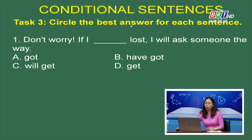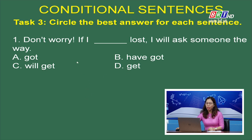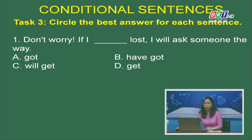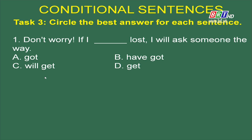Bây giờ chúng ta sẽ có bài tập thực hành câu điều kiện loại 1 và loại 2. Các em hãy chọn một lựa chọn đúng trong mỗi câu sau đây. Ở mệnh đề chính đang sử dụng thì tương lai đơn, vậy chắc chắn mệnh đề if phải dùng thì hiện tại đơn — đây là câu điều kiện loại 1. Chỉ có lựa chọn D là phù hợp. So the answer is D.